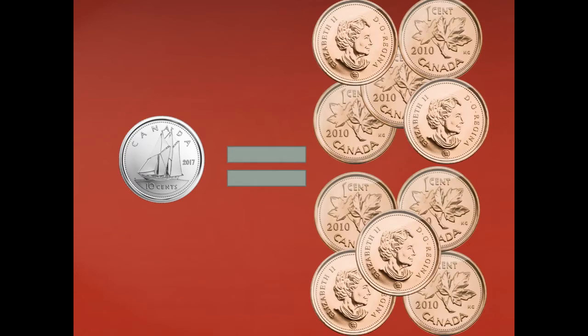A dime is equal to 10 cents, and that's why I have 10 pennies here. We don't use pennies anymore, but they are very helpful to help us remember that a dime is equal to 10 cents. Let's count them: one, two, three, four, five, six, seven, eight, nine, ten. A dime equals 10 cents.